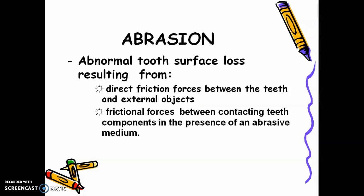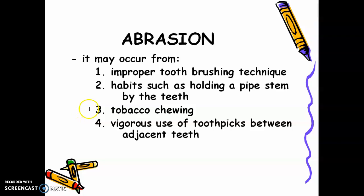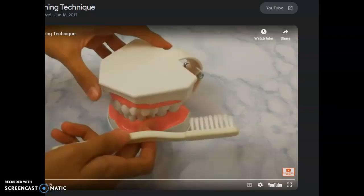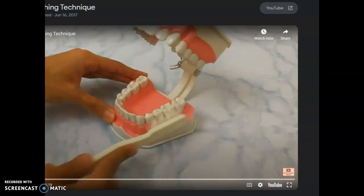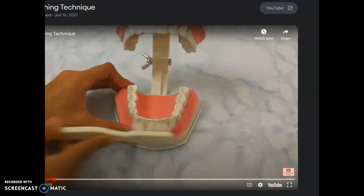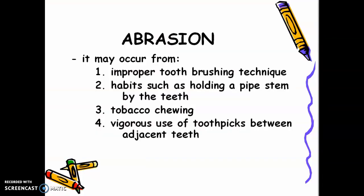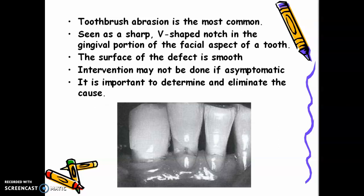Abrasion may occur from improper tooth brushing technique — very common in horizontal brushing. Horizontal tooth brushing technique can cause abrasion to the gingival third area of the tooth. Other causes include habits such as holding a pipe stem by the teeth, tobacco chewing, and vigorous use of toothpicks between adjacent teeth. Toothbrush abrasion is the most common, seen as a sharp V-shaped notch in the gingival portion of the facial aspect of a tooth.